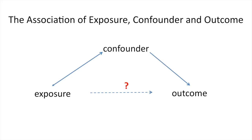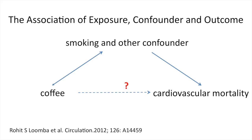So in theory: we have the exposure, we have the outcome, a questionable association between them, and then the confounder, which is usually closely associated with the exposure and also has something to do with the outcome. Another important example for the cardiovascular field is coffee and cardiovascular mortality. In 2012, there was a univariate relationship between coffee and cardiovascular mortality. However, when they adjusted for confounders such as smoking, suddenly this association disappeared. So we are fine — we can drink coffee in the break.